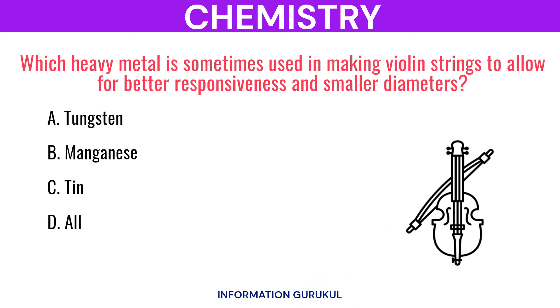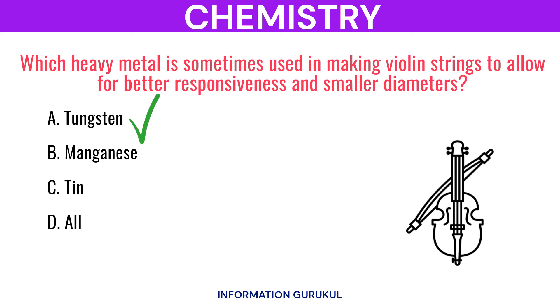Which heavy metal is sometimes used in making violin strings to allow for better responsiveness and smaller diameters? Tungsten.